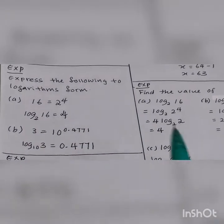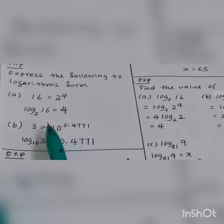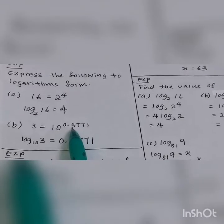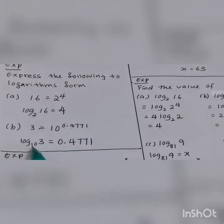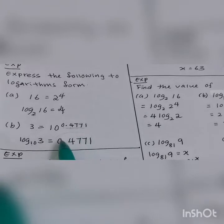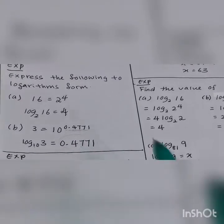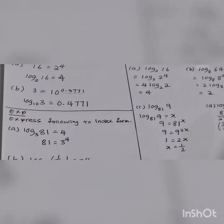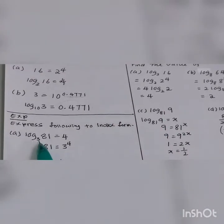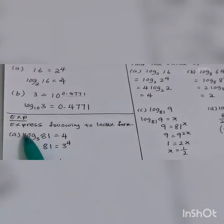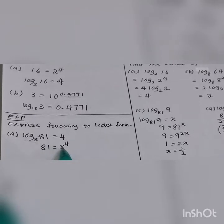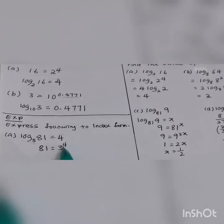Next one. This one is in index form; we change to logarithms. The power is equal to the log value. And then the power will become the number of the log. How about we go from the logarithm form and change to index form? This log — you can move it to the right-hand side, so the base will become the number, and the number on the right-hand side will become the power.